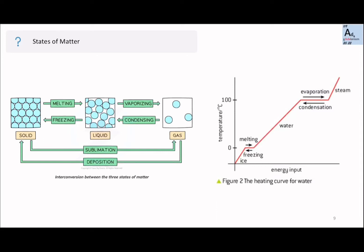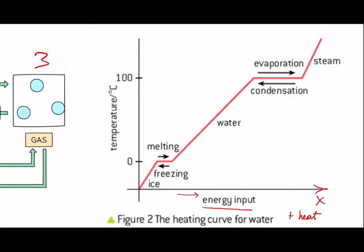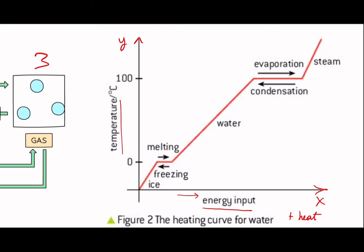Hello guys. In this slide we will be talking about changing the state of matter. We have three states, and then we have the graph that is applied here for the heating curve for water. If we take a closer look, on the x-coordinate we have the energy input. The energy input is increasing in this direction — one example of increasing energy is putting heat. If we increase the heat, the energy will increase. Likewise, the temperature will increase as shown on the y-coordinate, starting from zero and going up to 100 degrees and even further above.